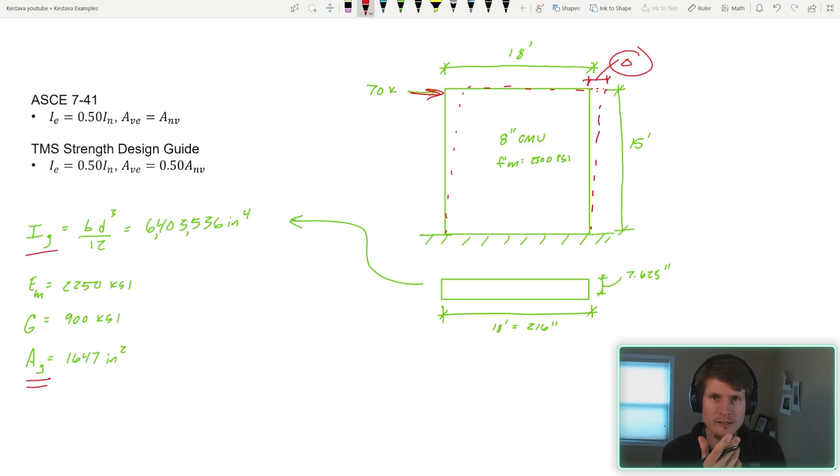One other thought that I had was, the TMS before it was called the TMS was written by the ACI code. Masonry fell under the concrete code and the concrete committee. So prior to it being called TMS, the masonry society and them forming this code, it used to be called like the ACI 530 or something like that. So I said, what does the ACI recommend? Concrete and masonry while different have plenty of similarities.